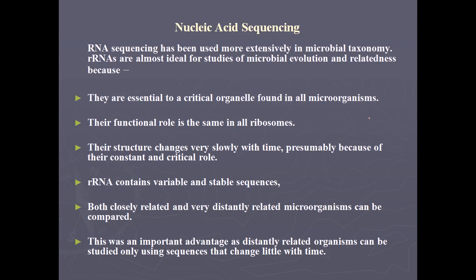We are talking about nucleic acid sequencing. By sequencing nucleic acid we can know how two organisms are related, because whether we are doing RFLP or PCR analysis, everything is based on nucleic acid structure. If we can sequence the whole nucleic acid, that will be the most reliable proof for us to look at the evolutionary context between different species and organisms.